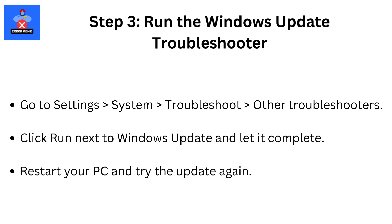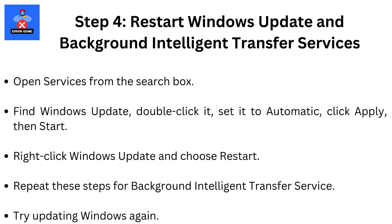Then Other Troubleshooters. Click Run next to Windows Update and let it complete. Restart your PC and try the update again. Step 4: Restart Windows Update and Background Intelligent Transfer Services. Open Services from the search box. Find Windows Update and double-click it.